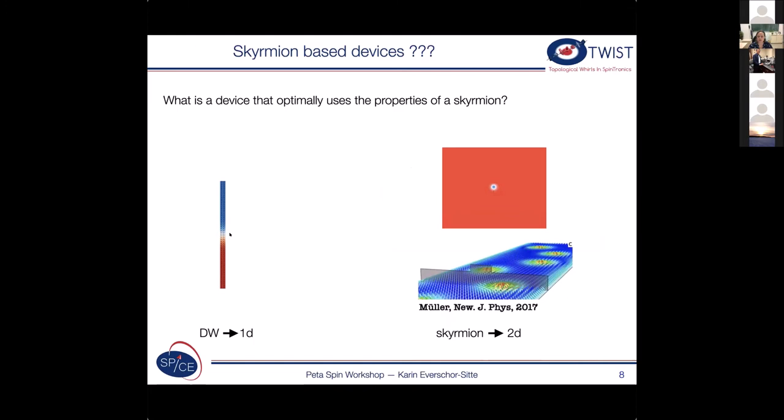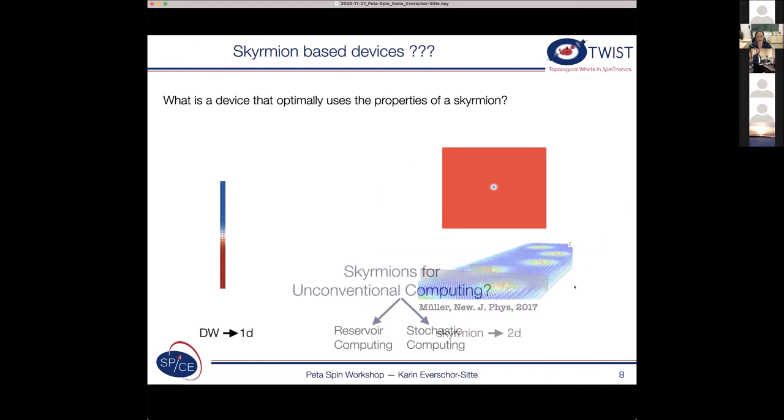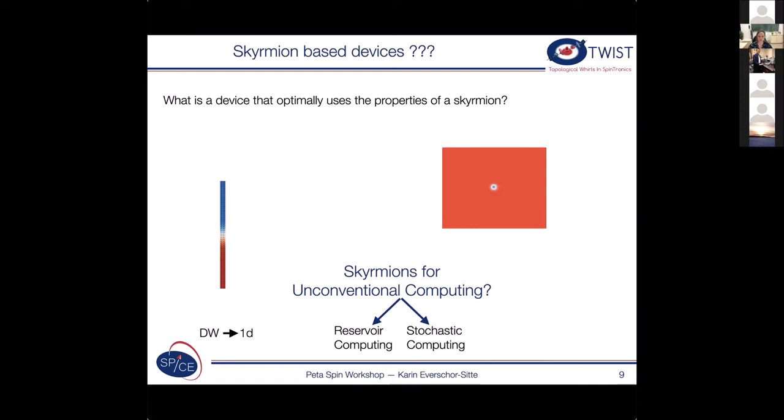So there are suggestions to kind of extend this concept of these one-dimensional wires for example here from Jan Müller or now Jan Marcel where you take a double lane racetrack but still the motion of these skyrmions here is effectively one-dimensional. So we have been working on unconventional computing schemes where we kind of make use that these skyrmions either can move in two dimensions or that they can kind of breathe or extend or that we use their two-dimensionality otherwise.